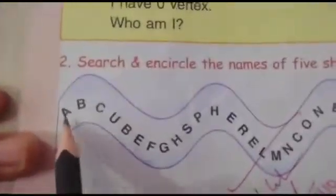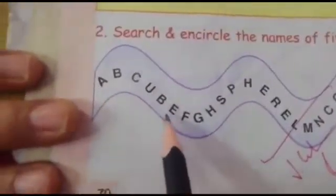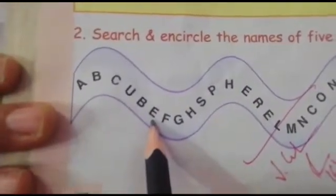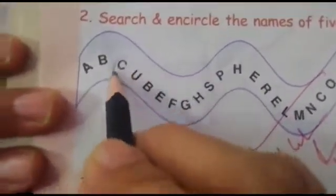Read it: A, B, C, U, B, E. Now which shape is this? C, U, B, E. Cube!